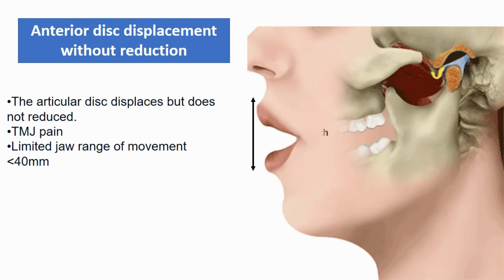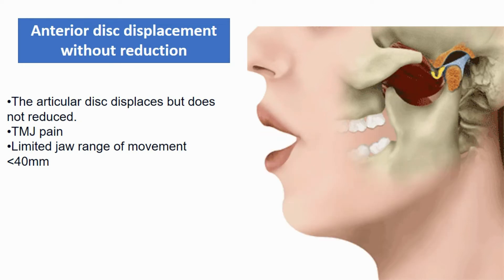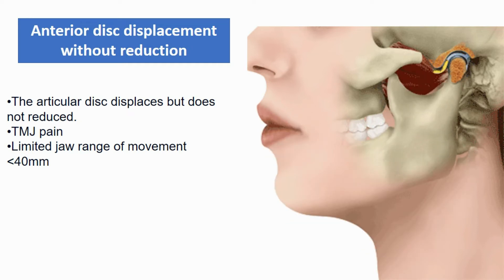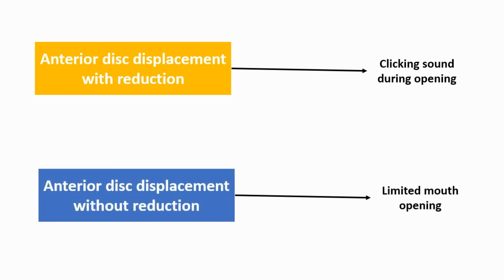In anterior displacement without reduction, the disc is placed anterior to the condyle head in the closed mandible. During opening, the disc interferes with the condyle and cannot return to its normal position. The mandible cannot open to its full range, causing limited mouth opening without a clicking sound. The difference: displacement with reduction is characterized by a clicking sound during opening, while displacement without reduction is characterized by limited mouth opening.